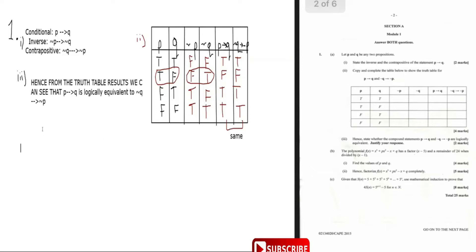Now let's look at part b. The polynomial f(x) is equal to x³ + px² - x + q.